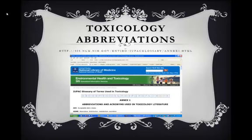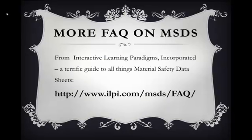The IUPAC has created a list of all toxicological abbreviations that you may encounter in safety information and in the literature. There is a link to this webpage on the resource guide under material safety data sheets. You will encounter these abbreviations frequently when reviewing MSDSs. The Interactive Learning Paradigms, Inc. has a terrific FAQ on the web with lots more information about MSDSs. This concludes Part 2 of the Safety Information Hunt.